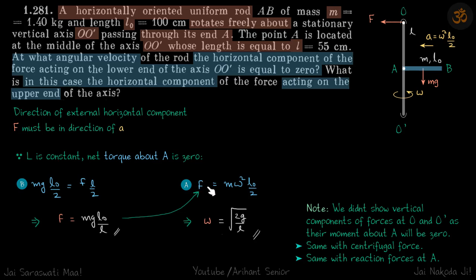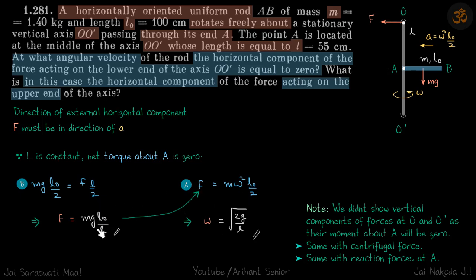The second equation comes from the x-direction: the centripetal acceleration of AB is ω²·(l₀/2), contributed by force F at the hinge, giving F = m·ω²·(l₀/2). With both equations, substituting F yields the value of omega, which is our answer.